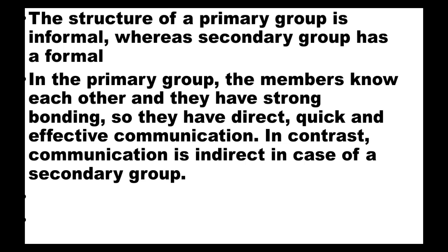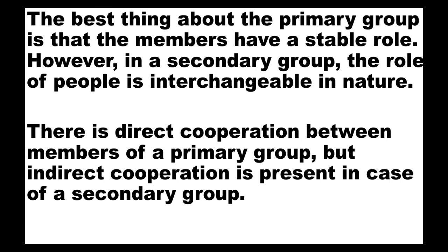In the primary group, the members know each other and they have strong bonding, so they have direct, quick, and effective communication. In contrast, communication is indirect in case of a secondary group. The best thing about the primary group is that the members have a stable role. However, in a secondary group, the role of people is interchangeable in nature. There is direct cooperation between the members of the primary group, but indirect cooperation is present in case of the secondary group.